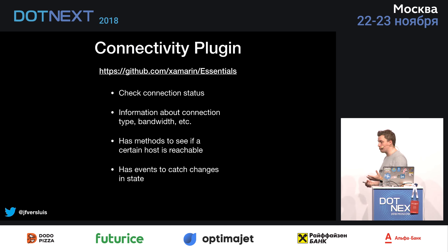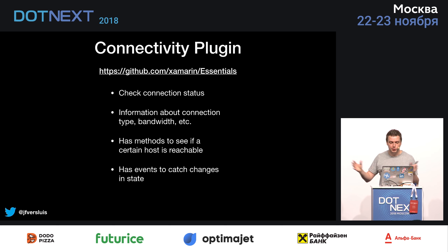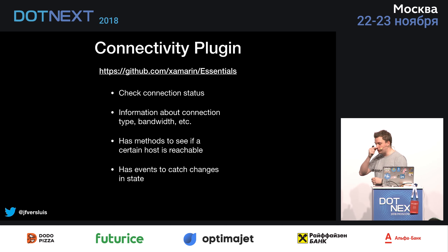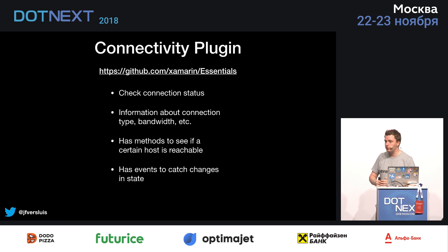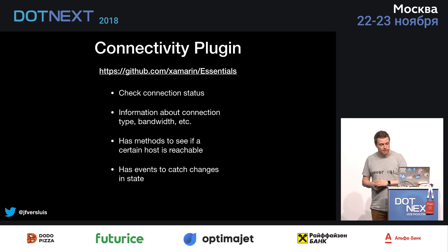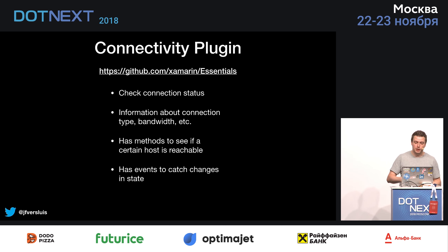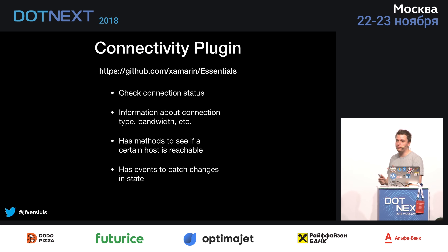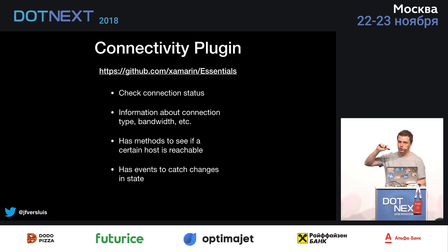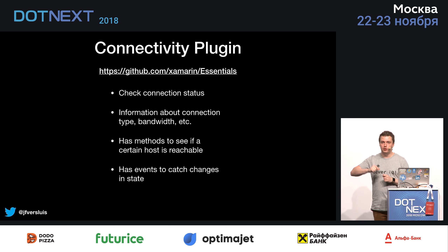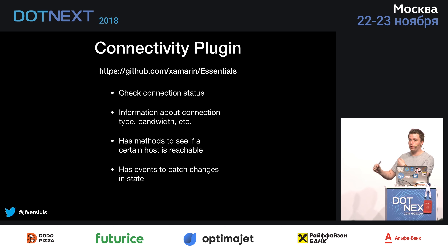The connectivity plugin — it's actually now part of the Xamarin Essentials library, which bundles a whole bunch of plugins into one. With this you can just check the connection status. It's your first step — not the best for user experience, but you can start the application, see if there's a connection, and if not, just say there's no connection. It can also give you information about what kind of connection the user has — is it Wi-Fi, cellular? It has methods to see if a host is reachable, and an event to see whenever the connection state changes so you can try to reload data when the connection comes back up.